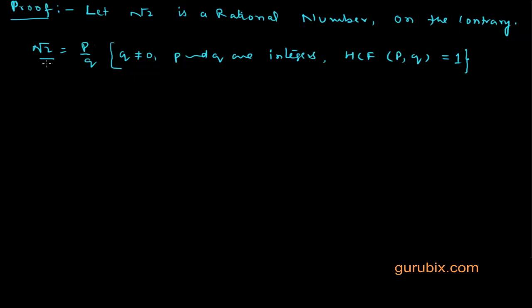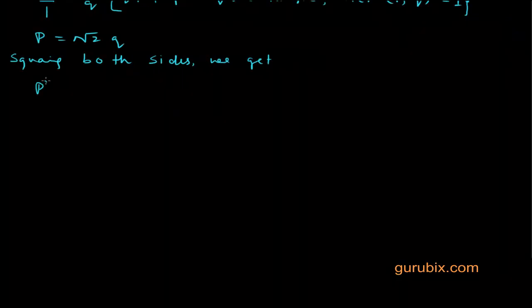Now we shall cross multiply these two numbers. We get p equals √2q. And squaring both sides, we get p² equals 2q².